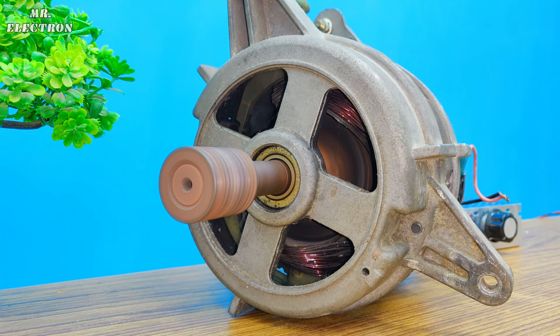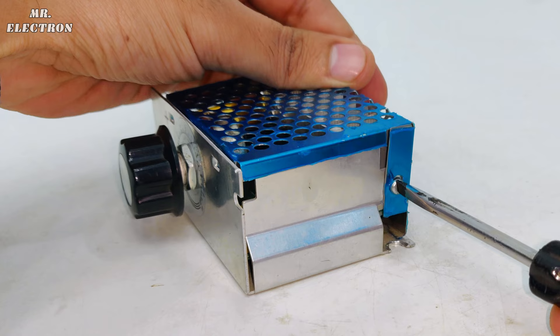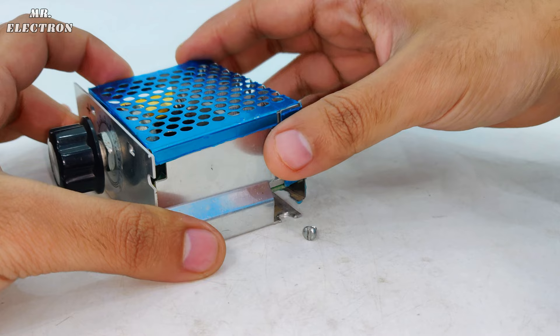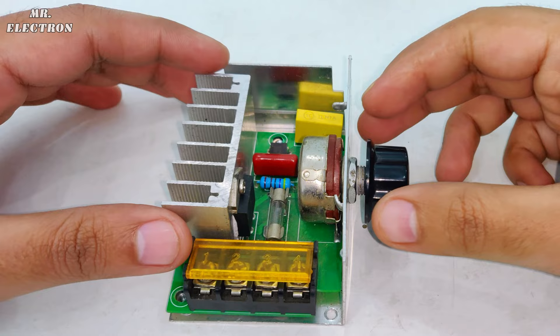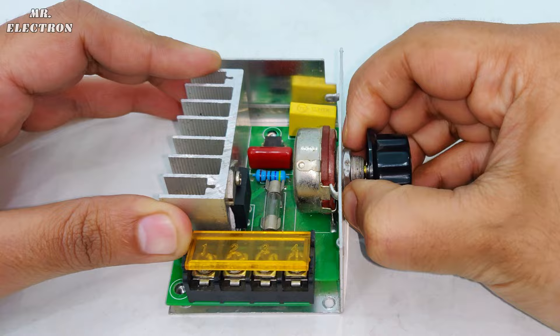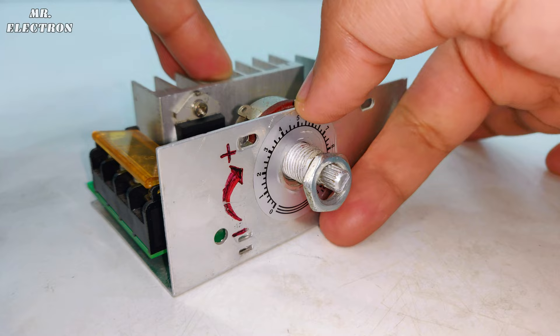Moving on to the repairing part, let's open up the controller casing quickly so that we can analyze the faulty component or components. Now, that is the inside view of the controller. Although, I cannot see any burnt component here. Anyways, let's open up the rest of the casing so that we can start with the fault testing.